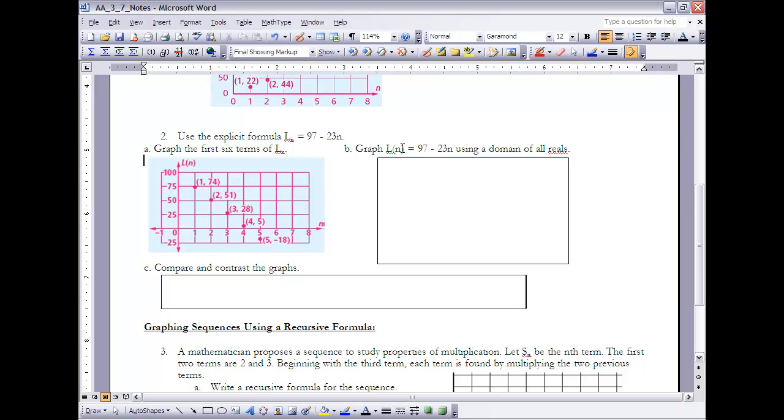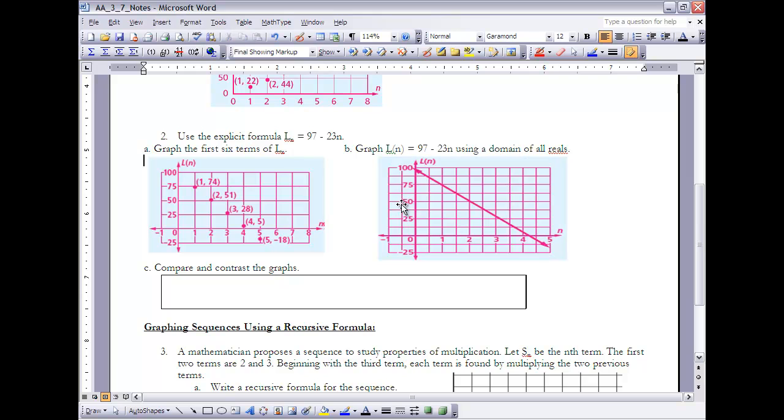Part b says: Graph L(n) = 97 - 23n using a domain of all real numbers. Basically, we're going to graph this sequence but over a continuous domain instead of a discrete domain. You'll notice that it looks exactly the same—it's just that all of the points are going to be included on that line. Every point that's over here would be on this line.